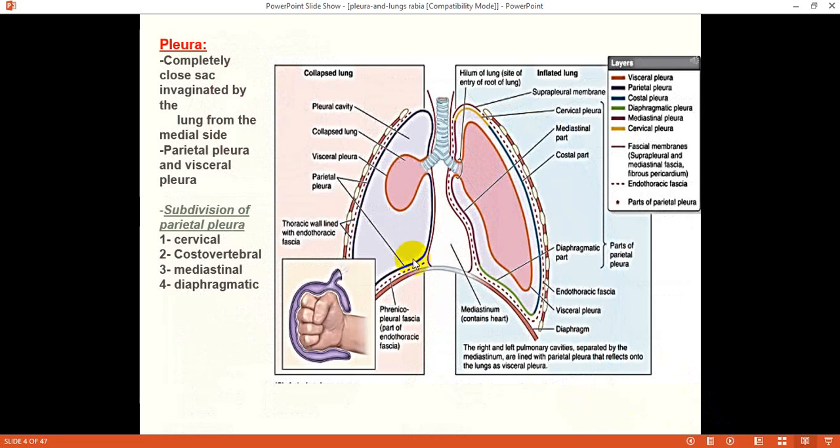Pleural membrane or pleura is a serous membrane making a closed sac which is called pleural sac. It is lined on the inner side by simple squamous cells which are mesothelial cells, and they secrete a serous fluid which is called pleural fluid.